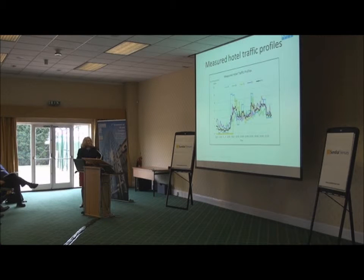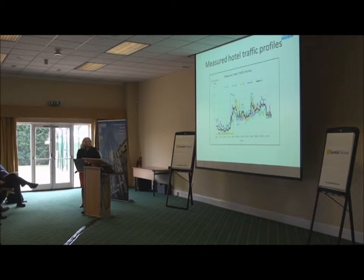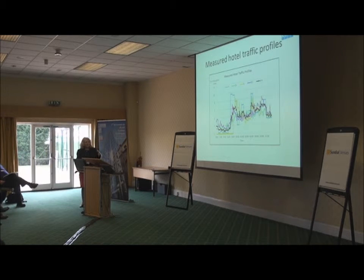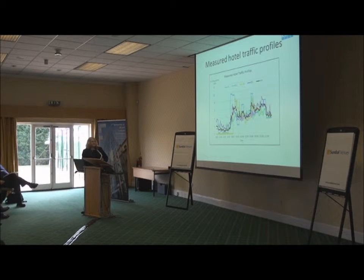Showing all four hotel buildings in one graph, there are peaks occurring at slightly different times. When calculating the average at a given time, it becomes a quite low black line because the peak times are not synchronized across buildings, so the average is not a good representation of typical traffic.